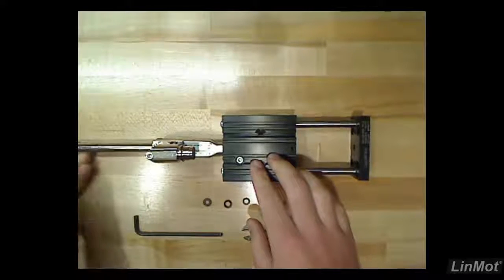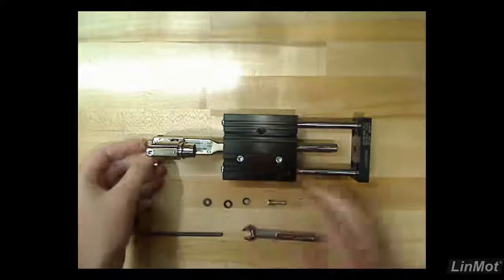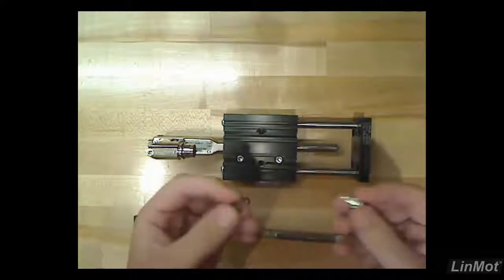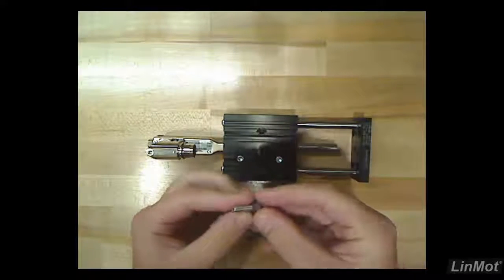When inserting the slider, the notched end should be on the opposite side of the guide's end plate. Take the mounting screw and socket washer and place them through the end plate.